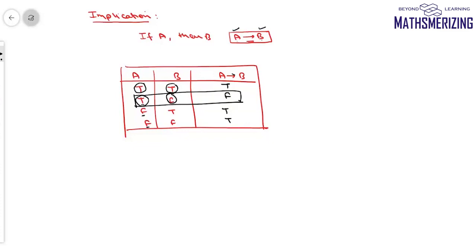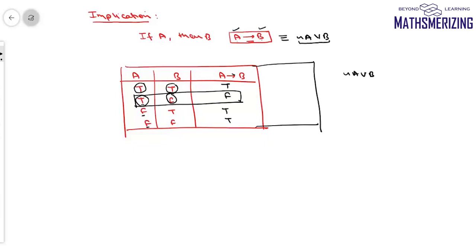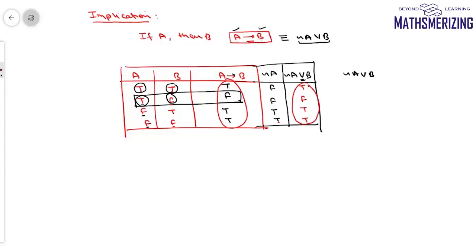A→B is logically equivalent to ~A∨B. Two statements are logically equivalent if they have the same truth values. Writing the truth values of ~A: false, false, true, true. Then ~A∨B is true when at least one is true: true, false, true, true. Comparing the truth values of A→B and ~A∨B, both columns are identical. So A→B is logically equivalent to ~A∨B, and we can replace one with the other when solving questions.